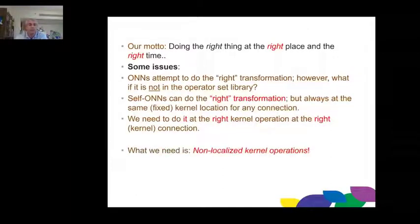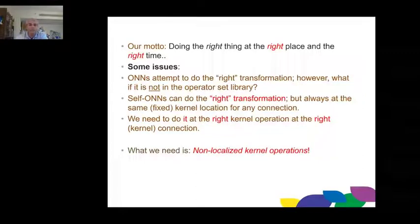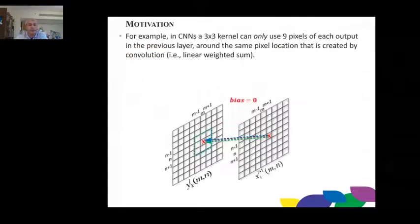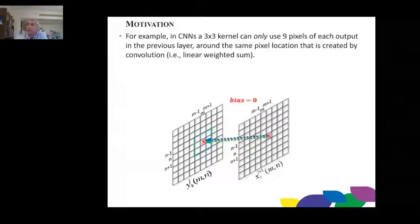With localized kernels, to create one output pixel you use only nine neighboring pixels from the previous layer. But what if pixels elsewhere also contain relevant information? You are missing them. So we relax this constraint and let kernels move — and better than random movement, we can learn how to move them.